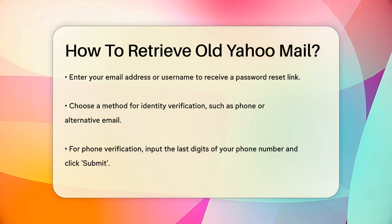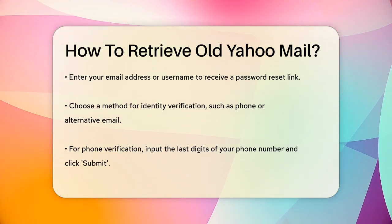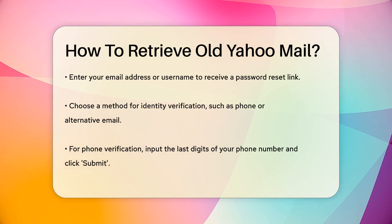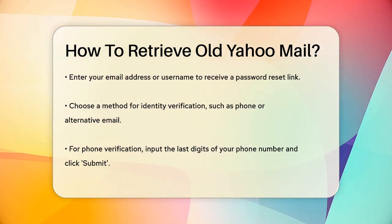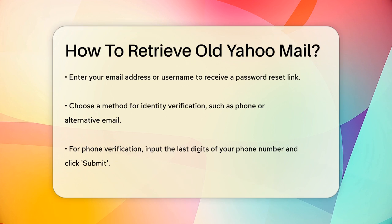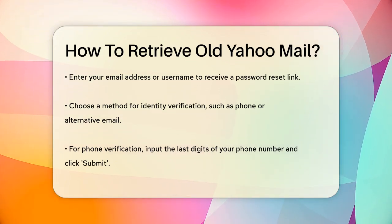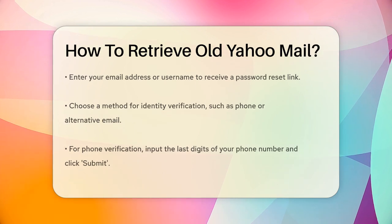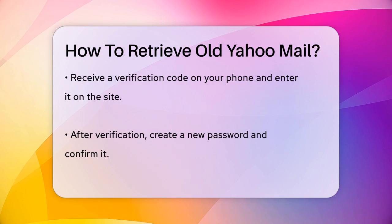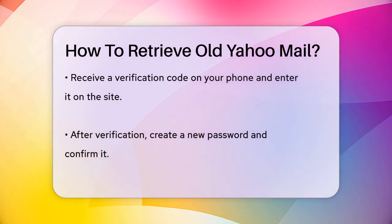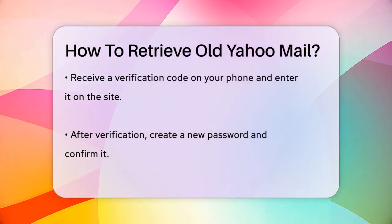If you choose Phone Verification, you'll need to enter the missing digits of your phone number and click Submit. Then click Send Code and enter the code you receive on your phone. Follow the on-screen instructions to complete the verification process. Once you've verified your identity, you'll be able to create a new password. Enter a new password and click Continue. You'll see a green tick mark and a message saying you've successfully created a new password.